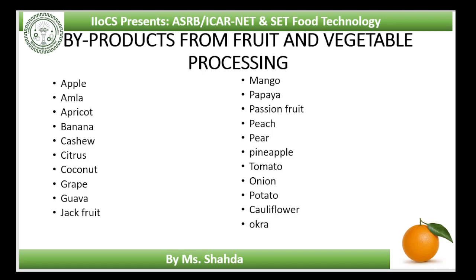Apricot is grown in the drier pockets of north-western Himalayas and Ladakh areas of Jammu and Kashmir. Apricot is a small soft fruit with white-orange skin. Its kernels are sweet and can be added to jam after removing the seed coat. There are two types: sweet kernel type and bitter kernel type. Oil extracted from kernels is similar to almond oil and can be used in pharmaceuticals and cosmetics. The oil cake is rich in protein and can be used as cattle feed. Kernels are sometimes used for making marzipan paste.